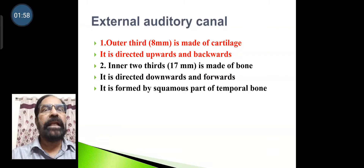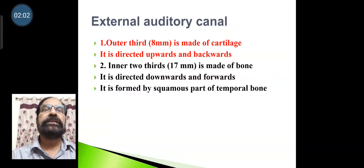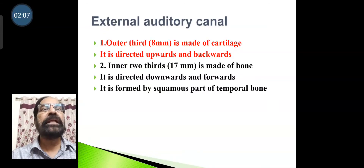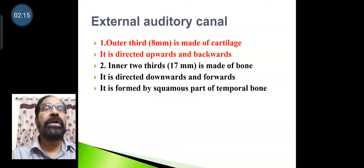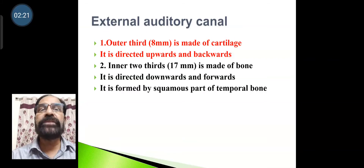The external auditory canal is made up of two parts. The outer one-third is made of cartilage and is directed upwards and backwards. The inner two-thirds is 17 mm long, made of bone, and is directed downwards and forwards. It is formed by the squamous part of the temporal bone.